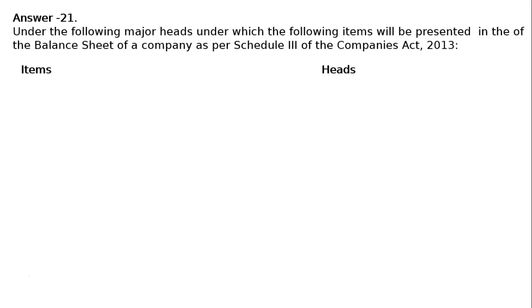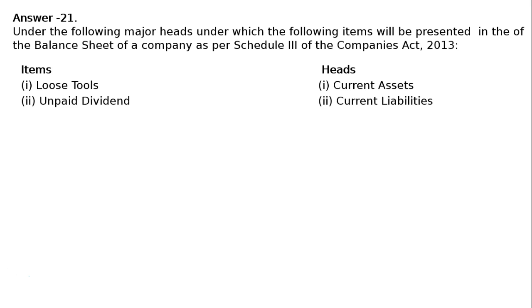Items and heads. Item 1: Loose tools — Head is Current Assets. Item 2: Unpaid Dividend — Head is Current Liabilities.